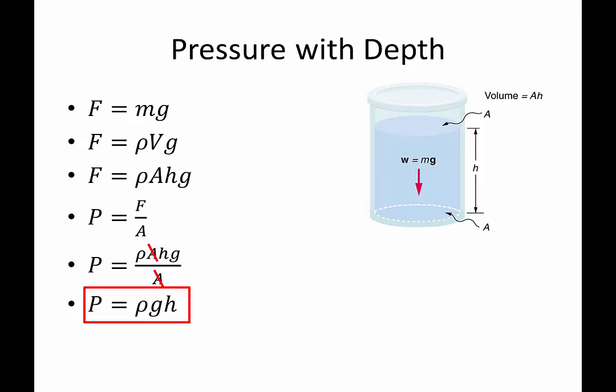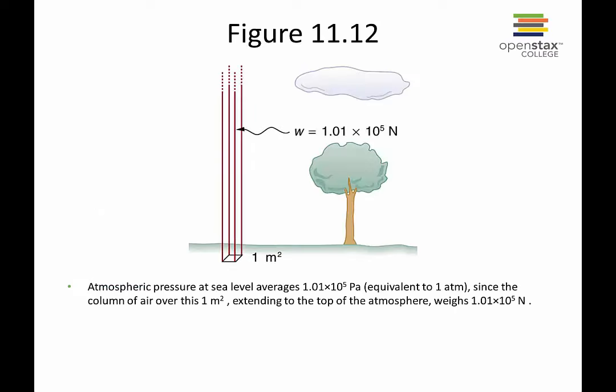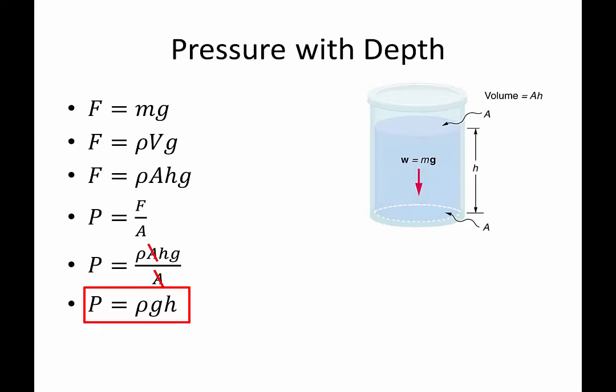Pressure is equal to rho GH is equal to the density of whatever fluid you're looking at, the gravity, and the height. Let's just do a quick example to illustrate this point. But before we get to that, I want to point to you, what I want to do is basically calculate the pressure in some fluid. Before we do that, though, we have to realize something, which is that the pressure that we've written here is actually just the pressure due to the water.